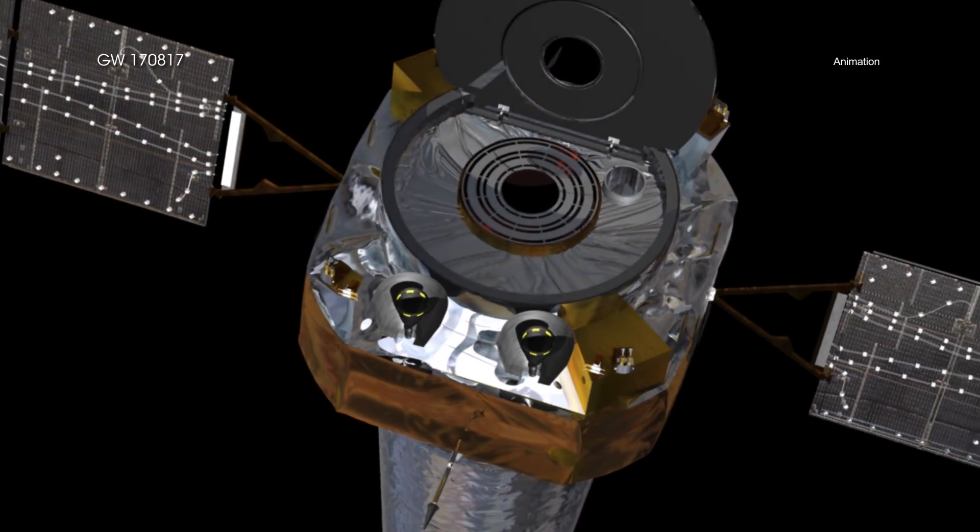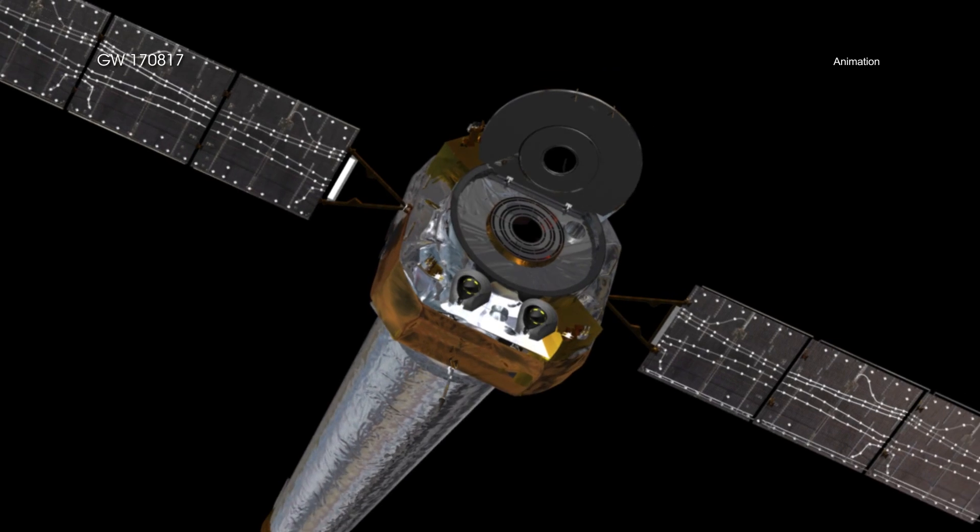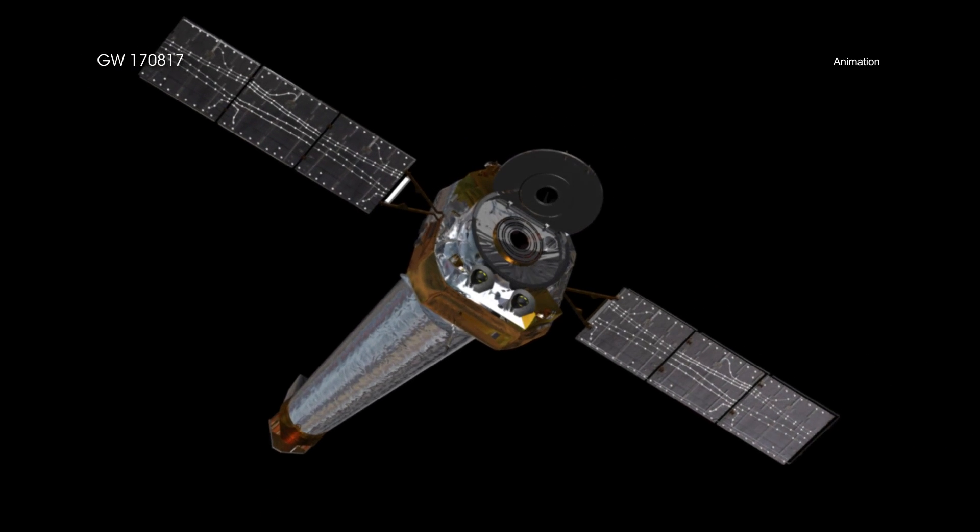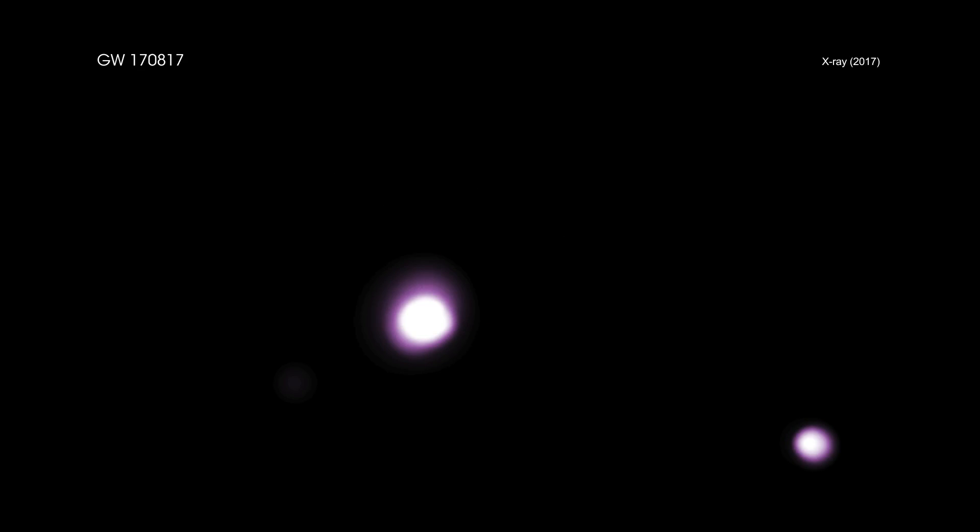What have astronomers seen in the Chandra data? Right after the initial LIGO detection was announced, scientists requested that Chandra quickly pivot from its current target to GW170817. At first, they did not see any X-rays from this source, but about nine days later, Chandra looked again and found a point source of X-rays.